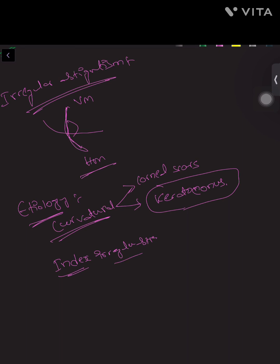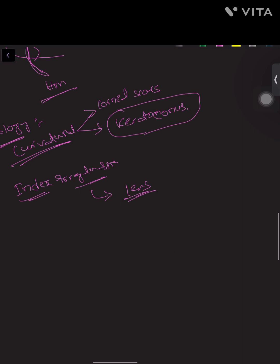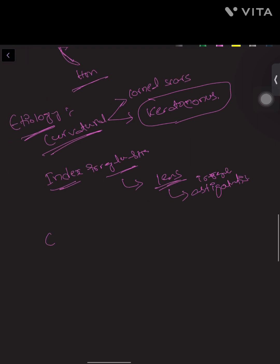Index irregular astigmatism occurs when there is a change in the refractive index of the lens, and this leads to irregular astigmatism.